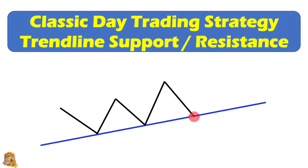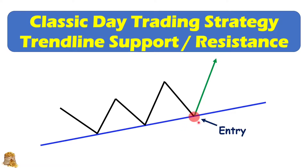When it touches the trendline for the third time, we're expecting the market to bounce to the upside, so the good entry point is here. It doesn't matter whether we have only one side of the trendline or both sides. Normally, the third time touching of the trendline gives you the highest probability to trade with the trend. For the fourth or fifth touch, the probability will be much lower.